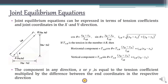Now let's see how we represent the joint equilibrium equations — sigma x equals zero and sigma y equals zero — in terms of tension coefficients and joint coordinates. For this, let's take an example: a tensile member AB, where the joint coordinates of A are (x_a, y_a) and the joint coordinates of B are (x_b, y_b).